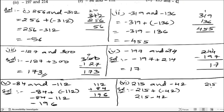So 215 minus 42. 5 minus 2 is 3 and 11 minus 4 is 7 and 1. So we got 173. 173 is the answer.